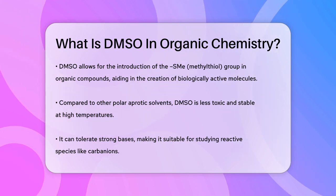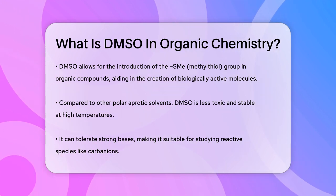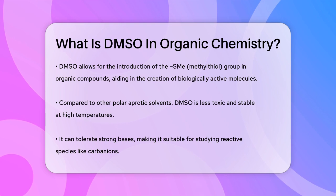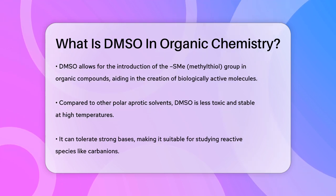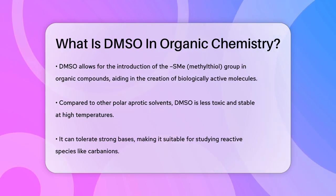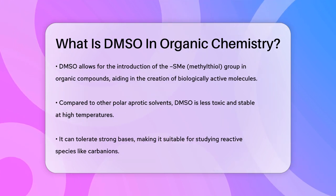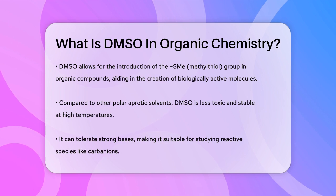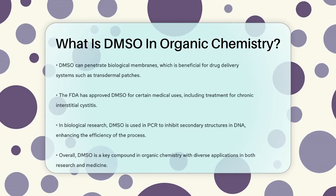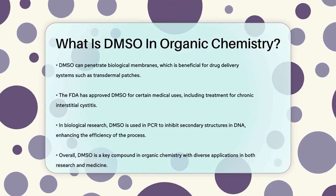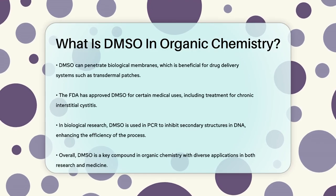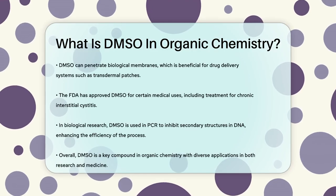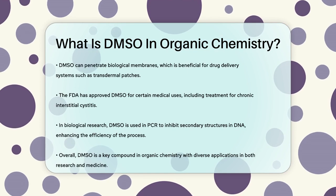In addition to its chemical uses, DMSO is notable for its ability to penetrate biological membranes. This property makes it useful in drug delivery systems, including transdermal patches, and it has been approved by the FDA for certain medical applications, such as relieving chronic interstitial cystitis.